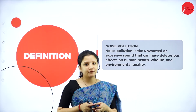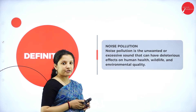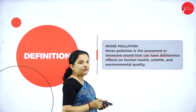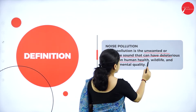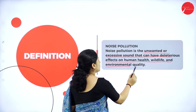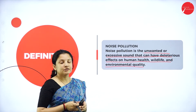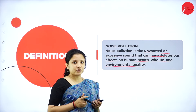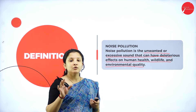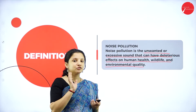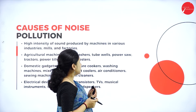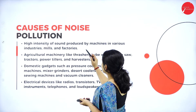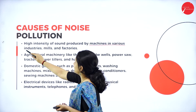Now, talking about the last form of pollution — noise pollution. Noise pollution is the unwanted or excessive sound that can have a deleterious effect on human health, wildlife, and the quality of the environment. There are certain decibel levels sufficient and good for the ears; beyond that, it is noise pollution. High intensity sound produced by machines in various industries, mills, and factories cause noise pollution.